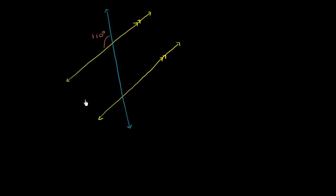The first thing that we might realize is that corresponding angles are equivalent. This angle — the angle between this parallel line and the transversal — is going to be the same as the angle between this parallel line and the transversal. So this right over here is also going to be 110 degrees.